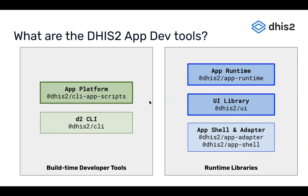Finally, we have the App Shell and the App Adapter. These provide things out of the box for a web application that make it a fully functioning DHIS2 app — things like the header bar, the ability to log in with a login dialog, and authentication. All of that is provided under the hood by the App Shell and App Adapter, but you don't really need to worry about those because they're provided for you by the App Platform build script. Your application just needs to focus on what that app actually does.